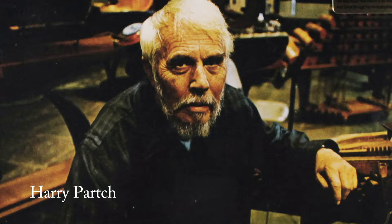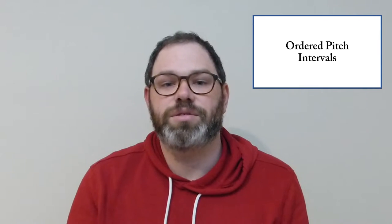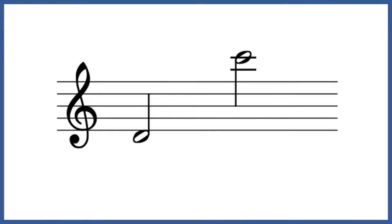What about non-equal tempered systems? Ask Harry Partch. Sometimes, when you're analyzing music, you might be interested in the direction of an interval. To indicate the direction, we'll use plus and minus signs. For example, if we wanted to refer to the interval between D way down here and this C way up here, we'd say plus 22, because it's 22 semitones in the upward direction.